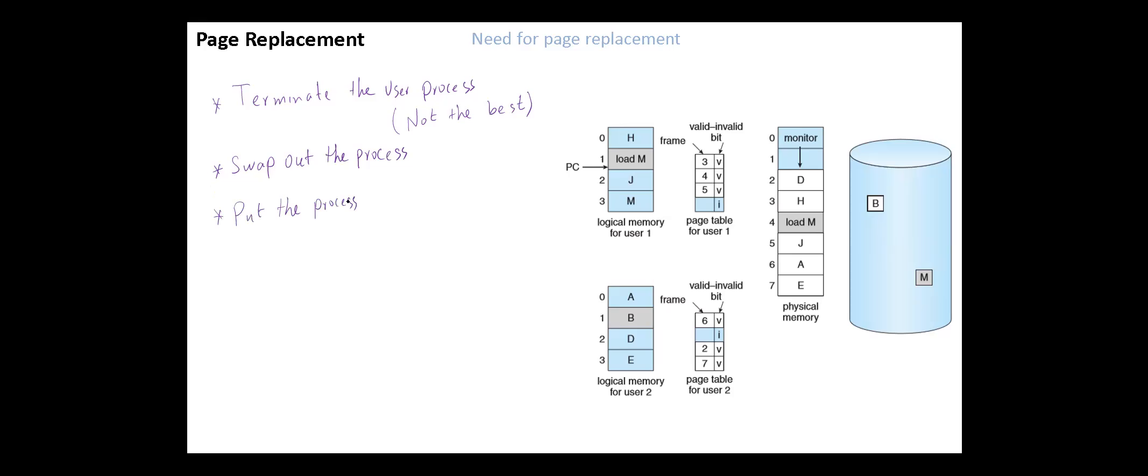Another solution is to put the process requesting more pages into a wait queue until some frames become available. Here we will discuss the most common solution, which is page replacement.